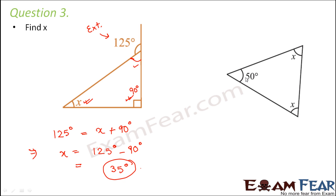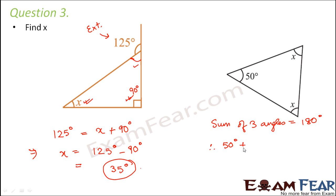Moving on to the next one: here we have an acute triangle where two angles are x — this is x, this is also x — and this is 50 degrees. We do not have any exterior angle given, only interior angles. We know that the sum of the three angles of a triangle is 180 degrees, so we can write 50 degrees plus x plus x is equal to 180 degrees.